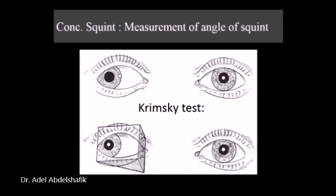To measure angle of squint, a prism can be used together with corneal light reflex test. Prisms of increasing power are applied in front of the deviated eye.